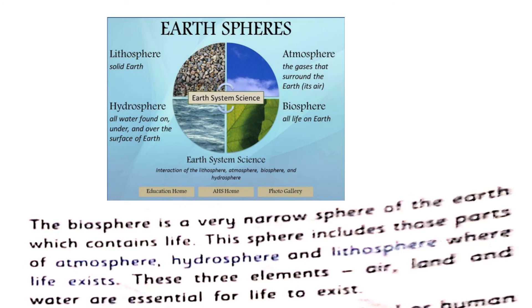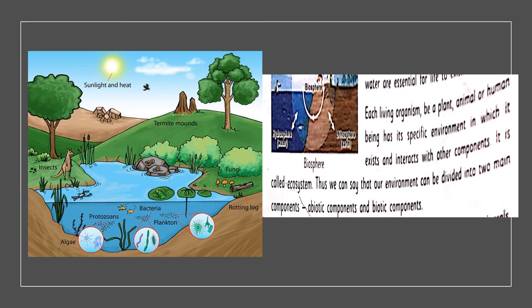Air, land and water are very essential for life to exist. If we need to have life, we need air, water and land. If any of these is not there, then life will not be possible. Each living organism — whether it is a plant, any animal or a human being — has a specific environment in which it exists. Plants have their own environment to live, animals live in their own environment, and humans have a specific environment to live.